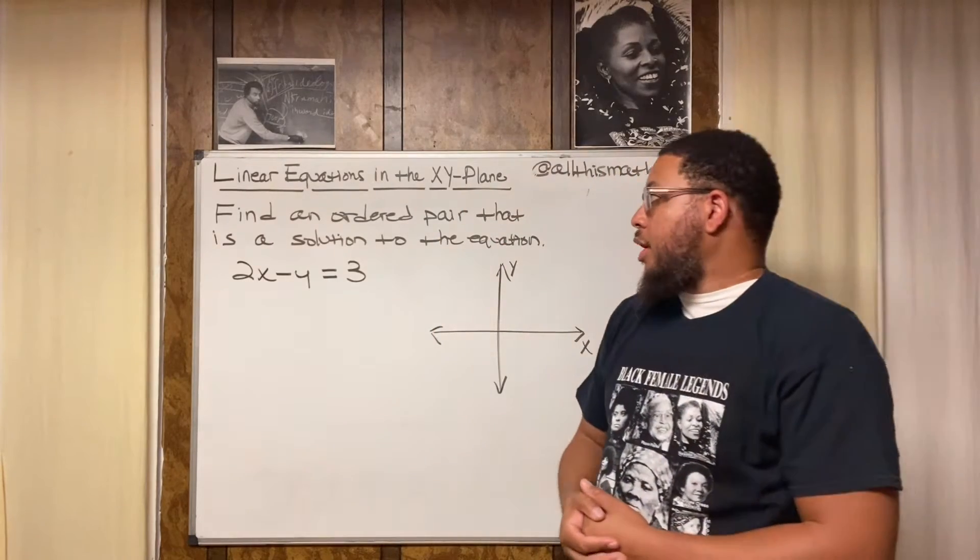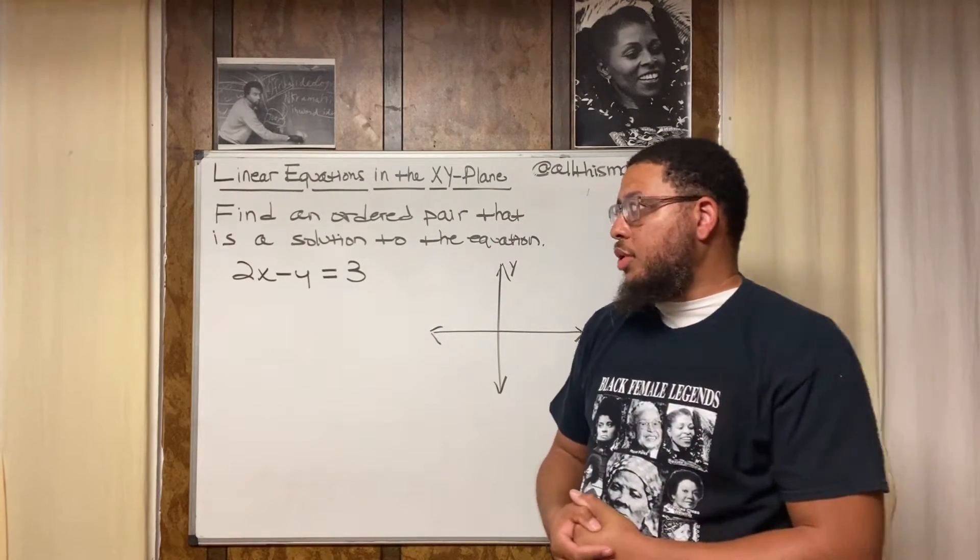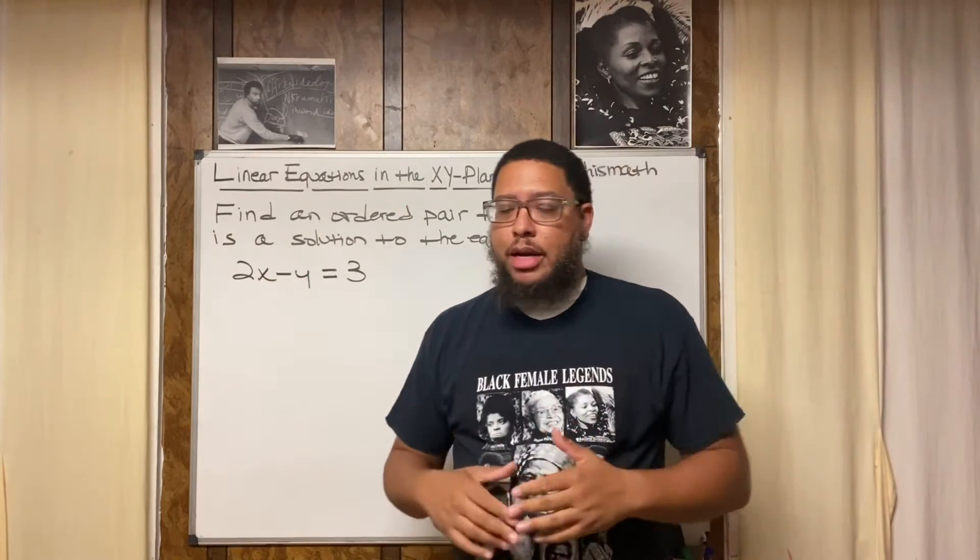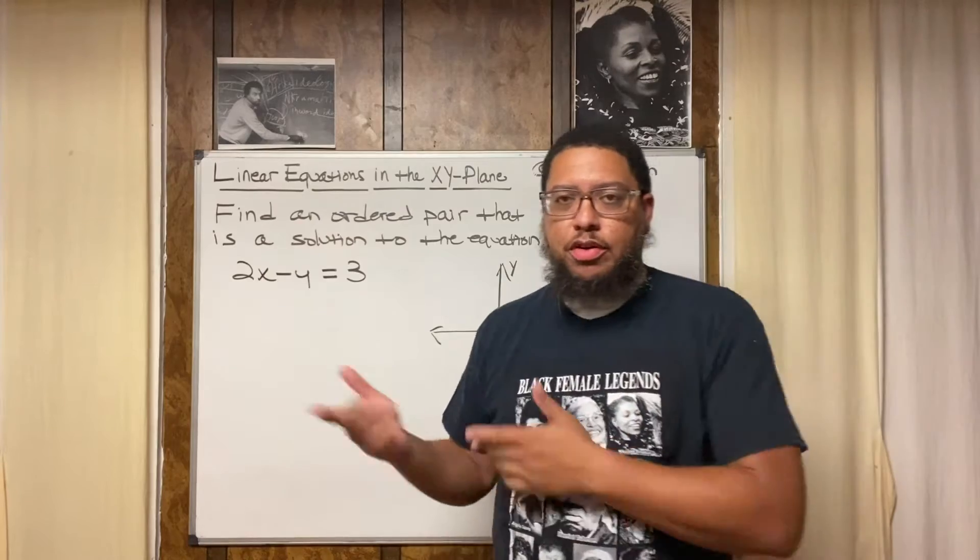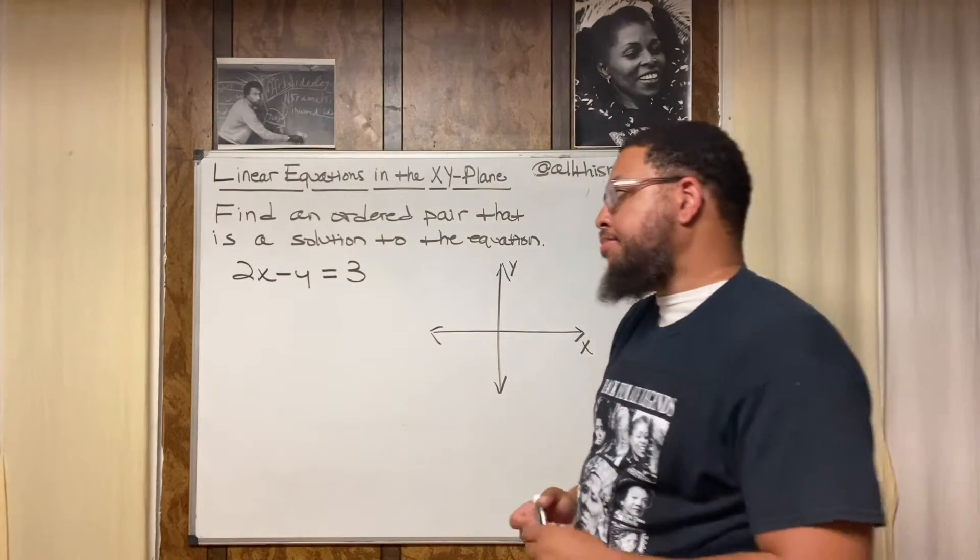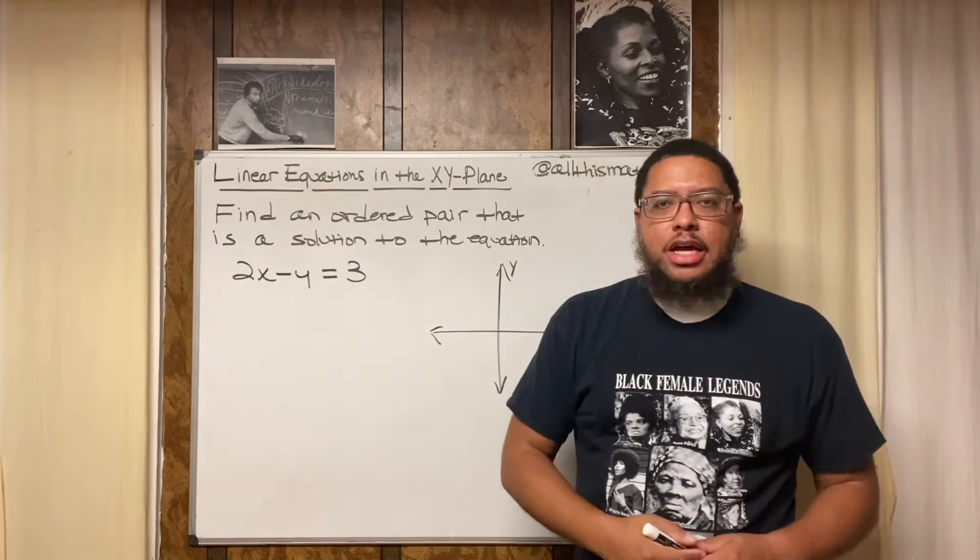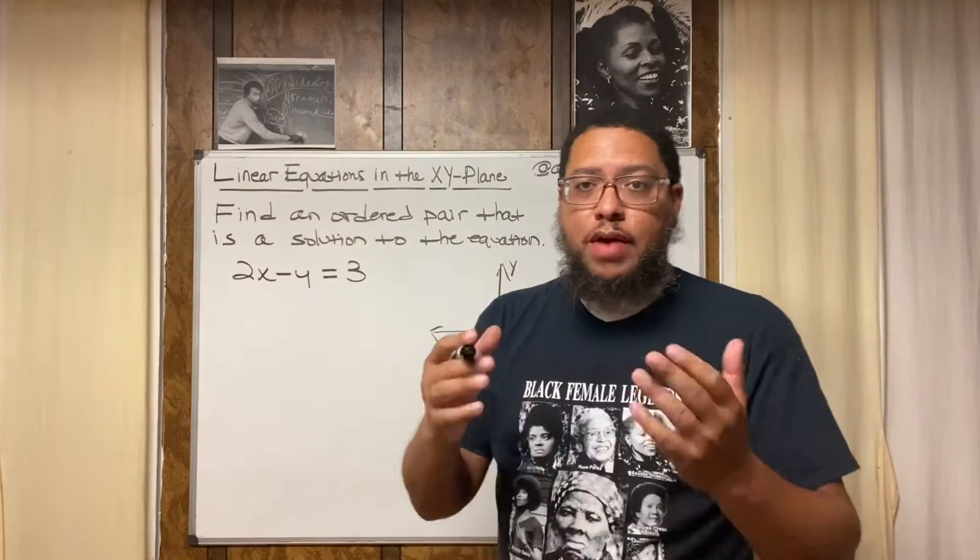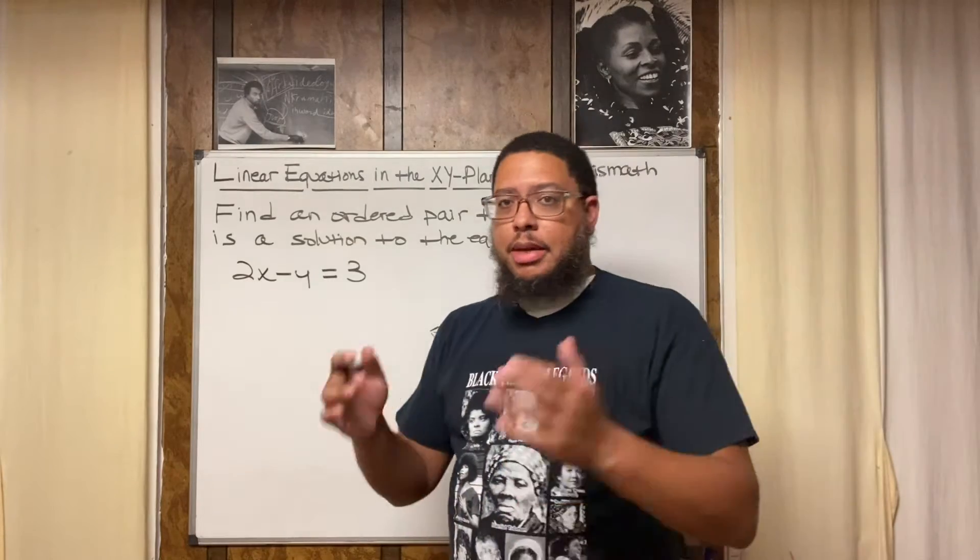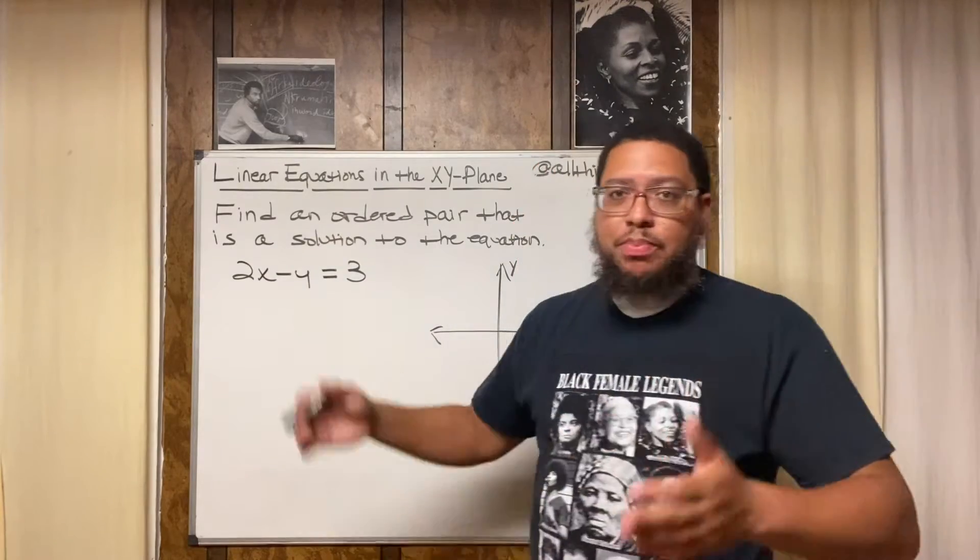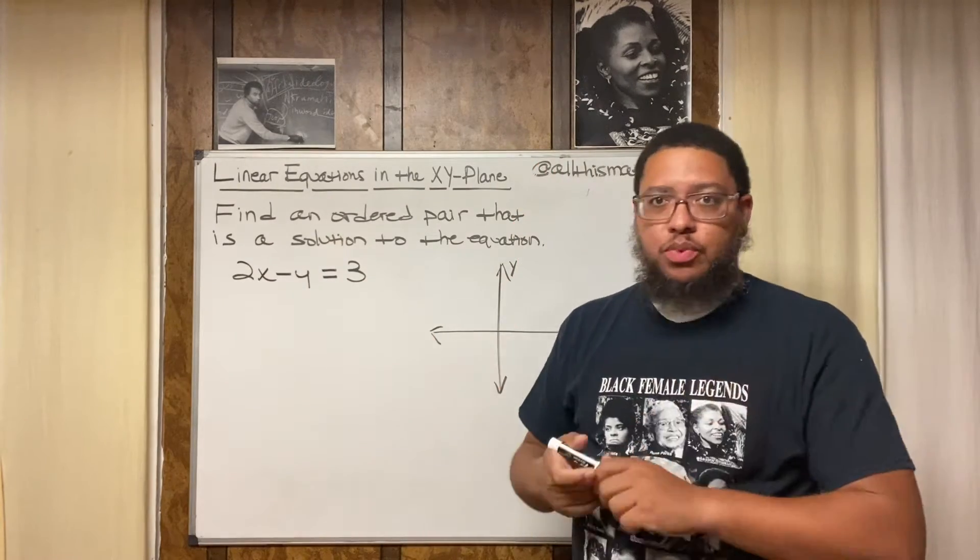So in order to do this, what we do is we pick any x value we want. It doesn't matter. Usually I use zero, but I'm gonna just be different for the sake of this video just to let y'all see what happens. For x, I think I'm gonna choose negative 2. So let's see what y is when x is negative 2. If I choose negative 2 for x, that means I already got half of the ordered pair already.